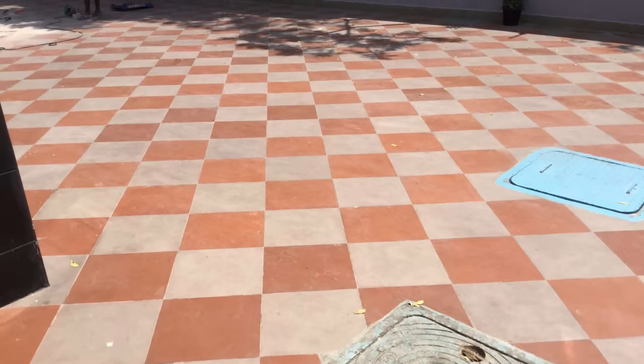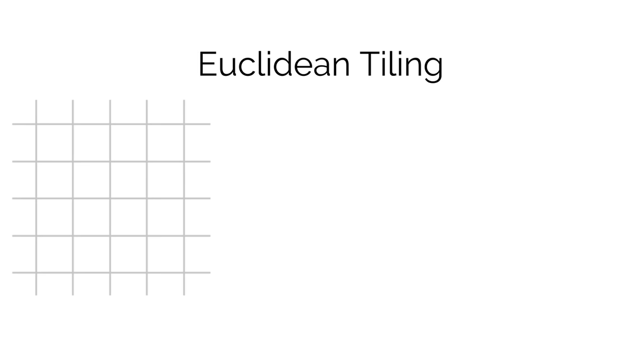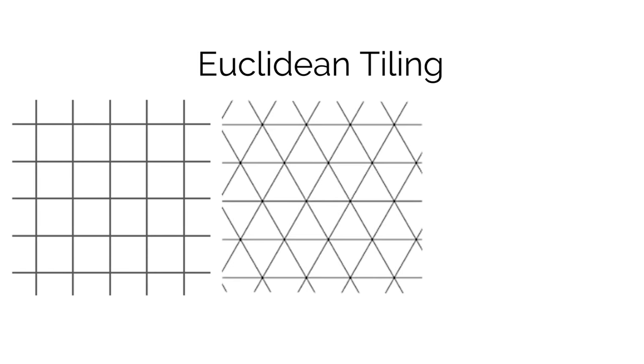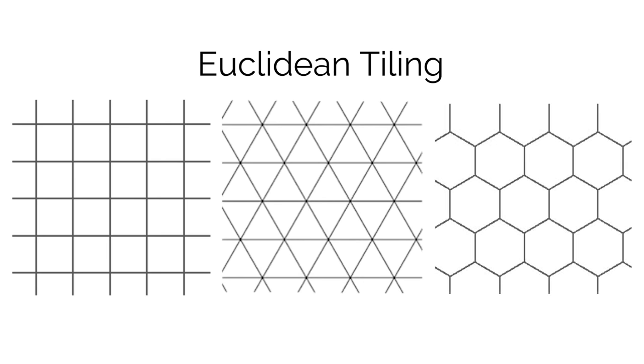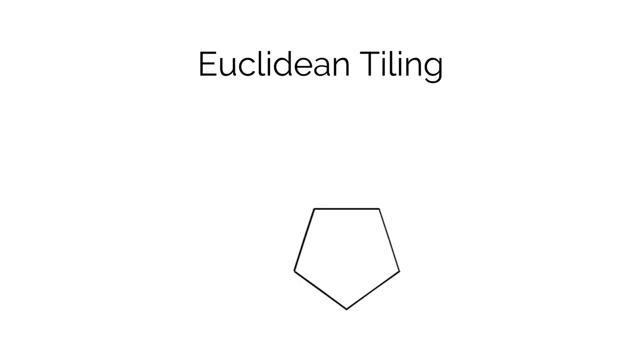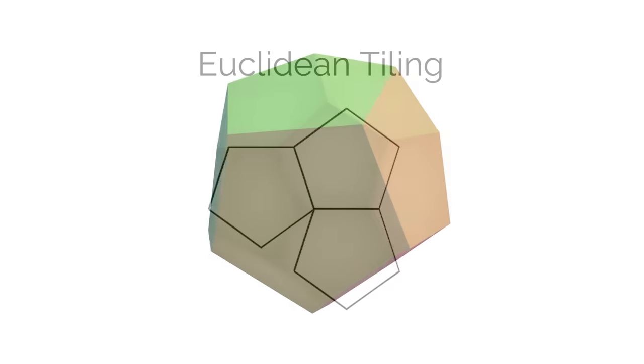Another way to think about curvature is with tiling. There's only three ways to tile the Euclidean plane with regular polygons. Four squares at a vertex, six triangles at a vertex, or three hexagons at a vertex. If you were to try pentagons, you'd find that there's not enough space for 4, and too much gap for 3, but those gaps could get filled with spherical curvature, and you have the familiar dodecahedron.